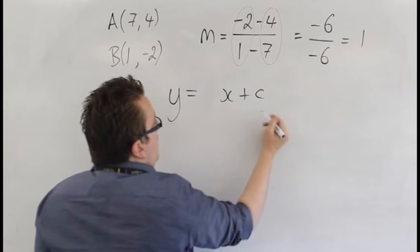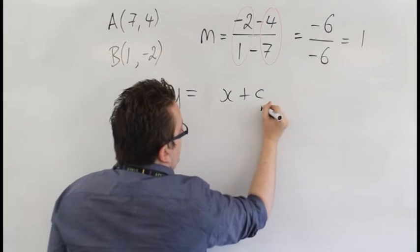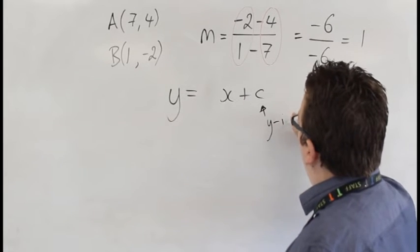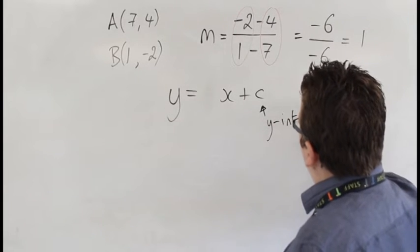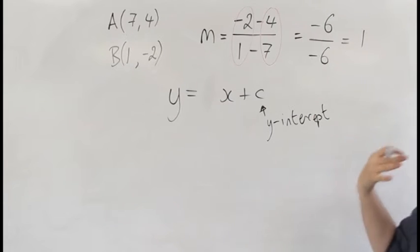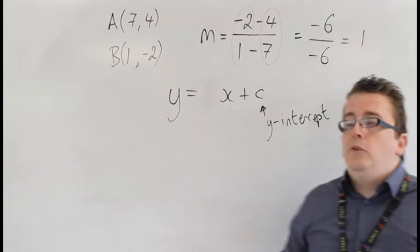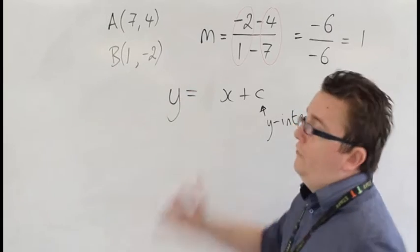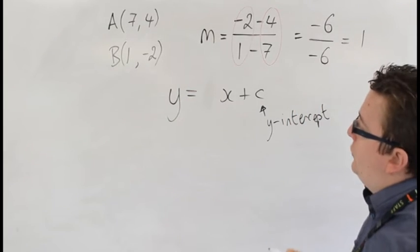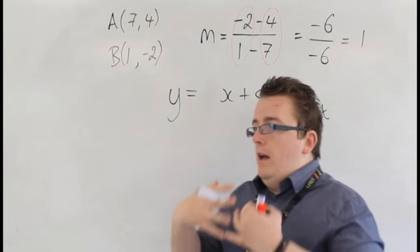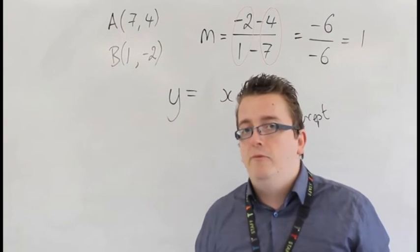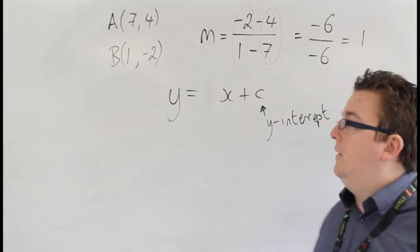It's now apparent that actually the only thing that I now need to find is the y-intercept, that value of c. So, in order to do that, what you need to do is you need to substitute in one of the two coordinates. It doesn't matter which one you substitute in, because effectively what you're doing is, if you substitute in either, you should get the same value for c, you should get the same answer.